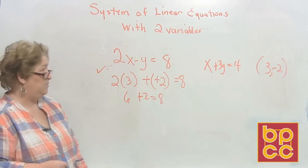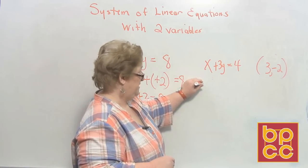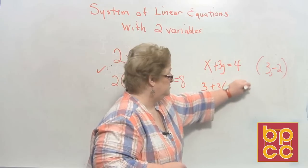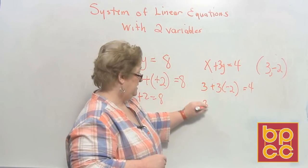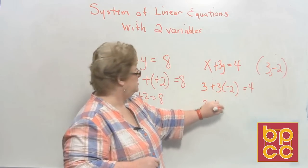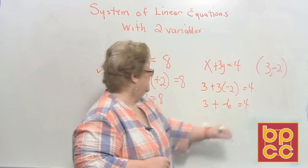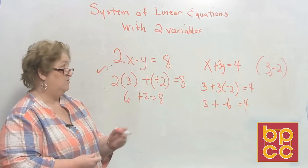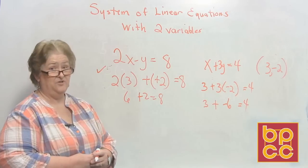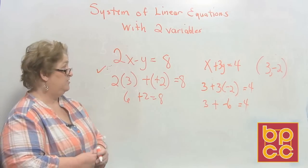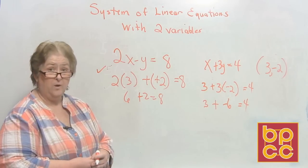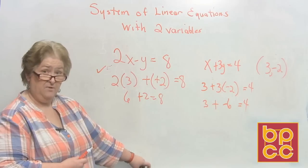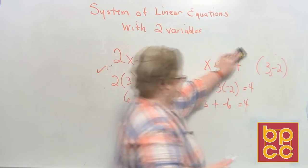Let's look at the second equation. x is 3 plus 3 times negative 2, which equals 4. That is 3 plus 3 times negative 2 is negative 6. And 3 plus negative 6 does not equal 4. So the ordered pair 3 comma negative 2 is not a solution for these two linear equations, which means they don't have this point in common when we graph them.